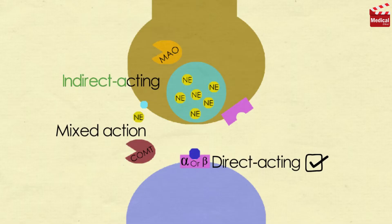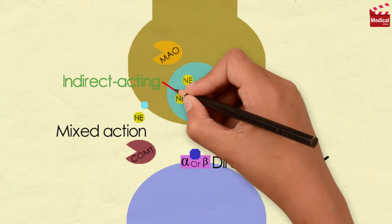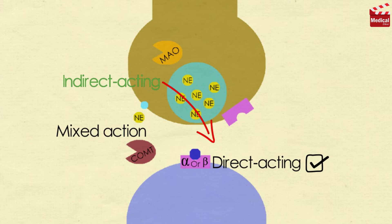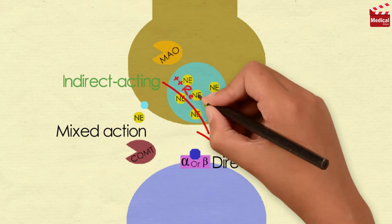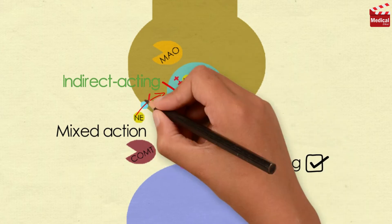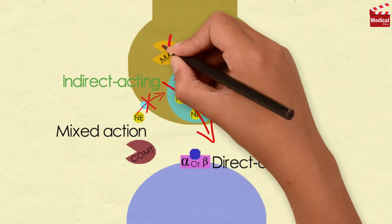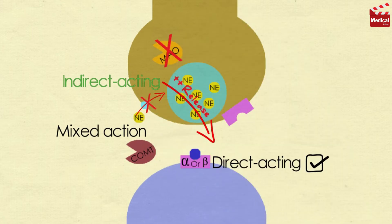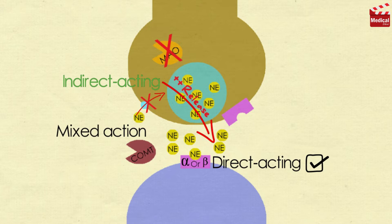As we said before, the indirect acting adrenergic agonists cause the release, inhibit the reuptake, or inhibit the degradation of epinephrine or norepinephrine. They potentiate the effects of epinephrine or norepinephrine produced endogenously, but do not have a direct effect on the postsynaptic receptors.